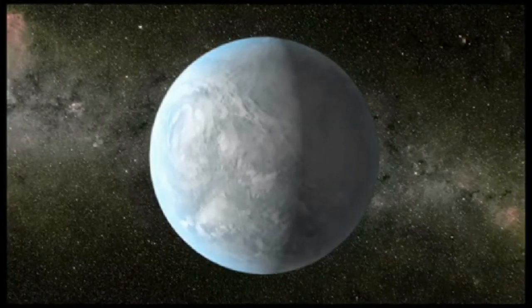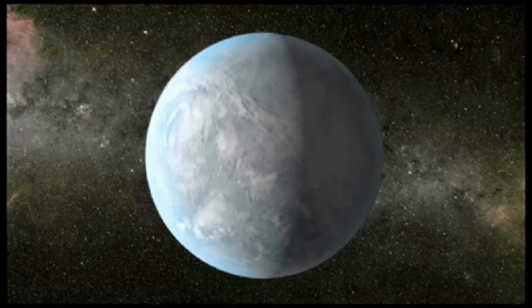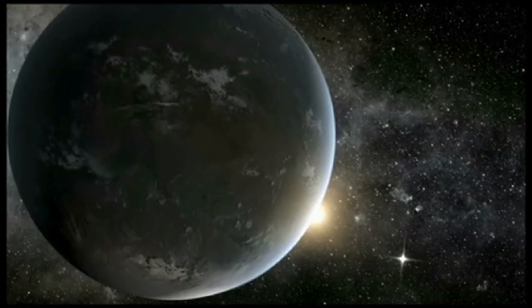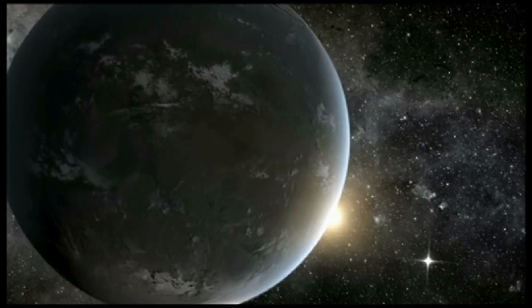NASA's Kepler mission has discovered three super-Earth-sized planets orbiting in the habitable zone of their stars. The habitable zone is the distance from a star where the surface temperature of an orbiting planet could be suitable for liquid water.